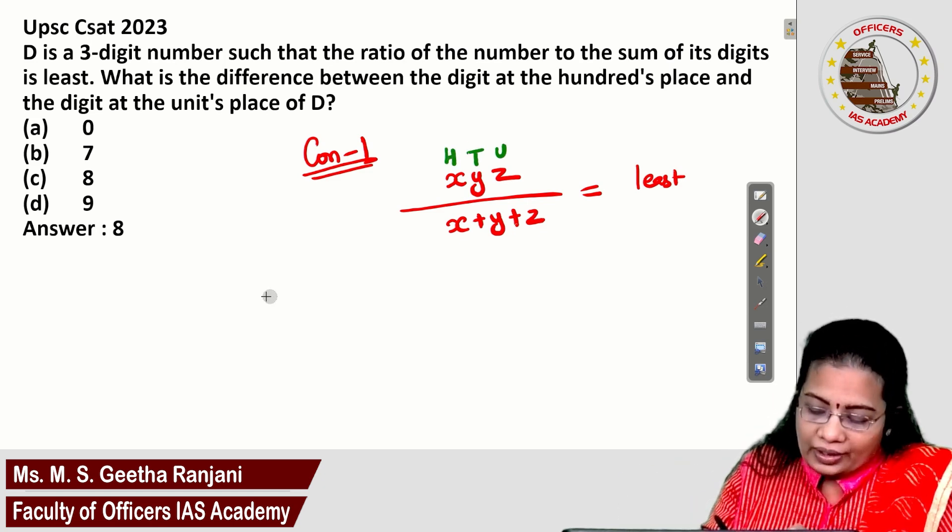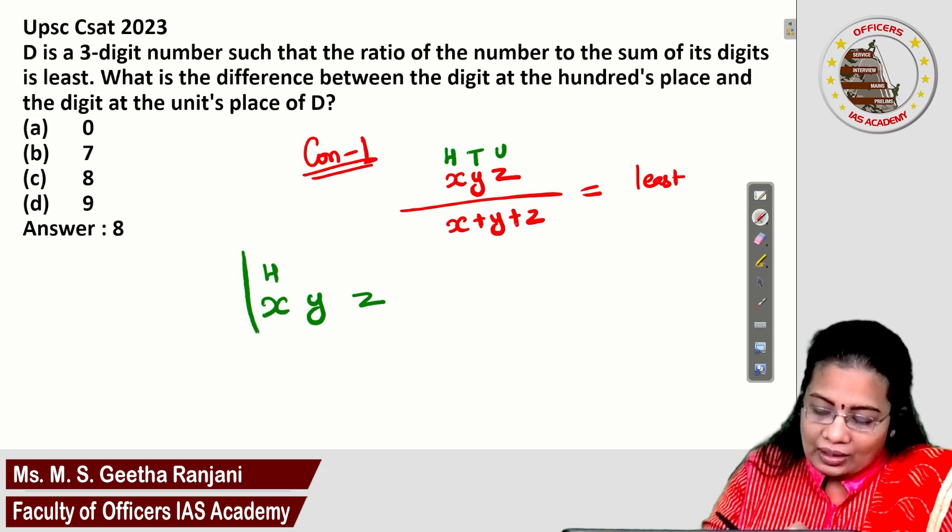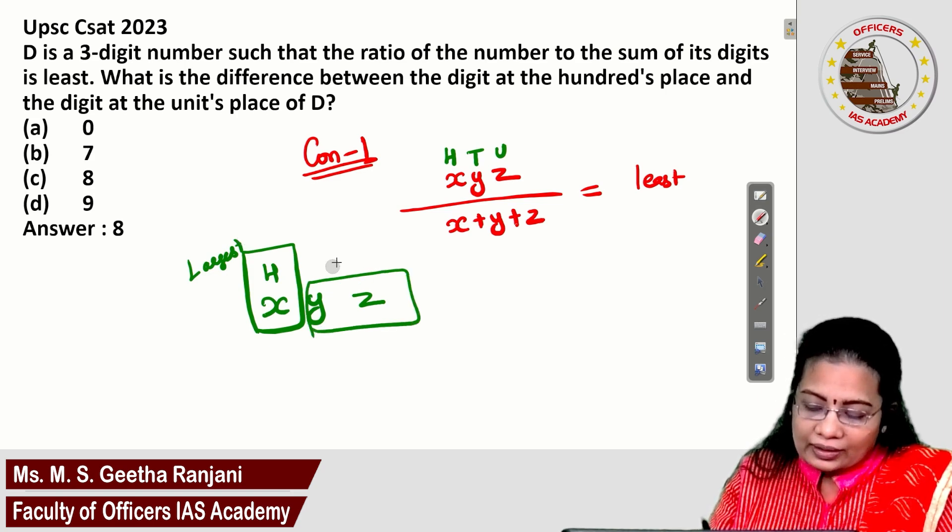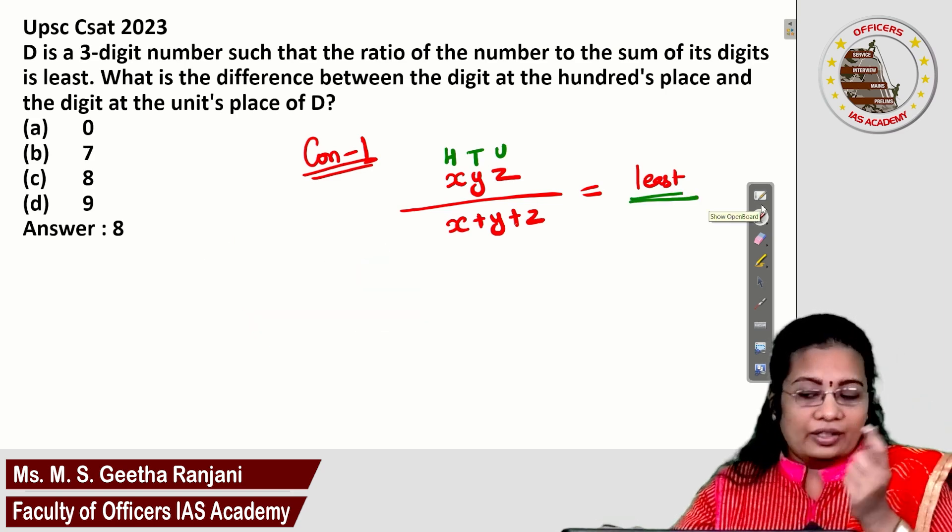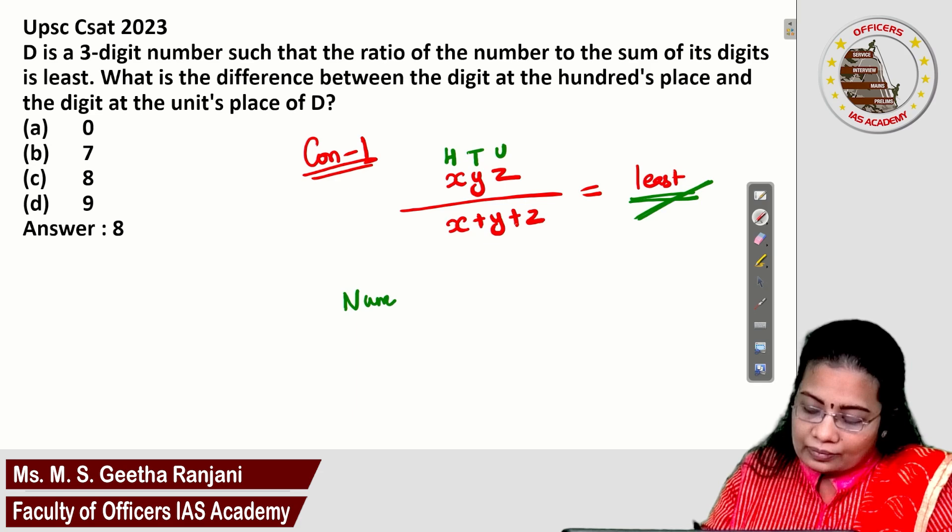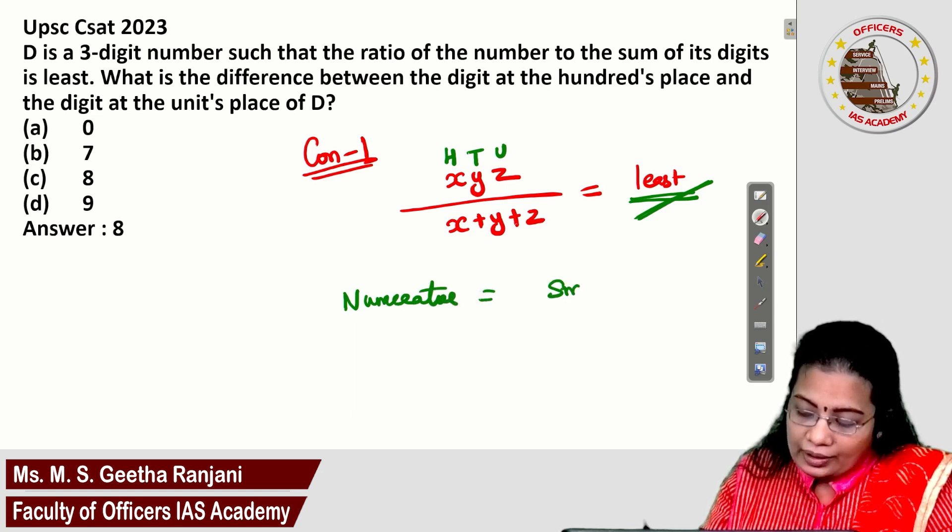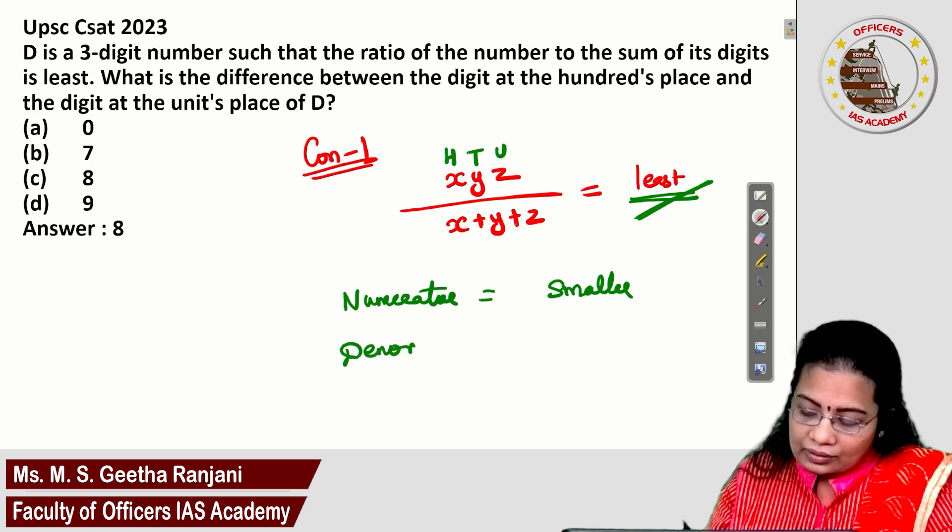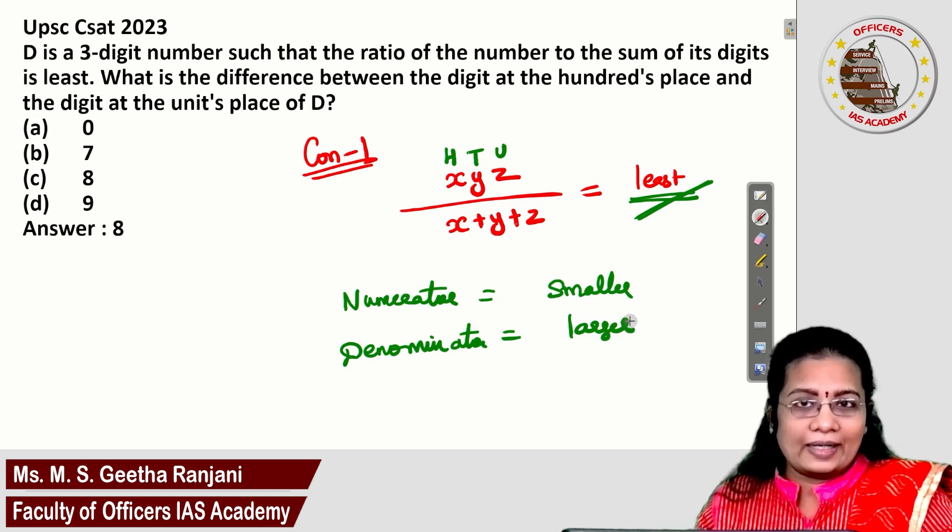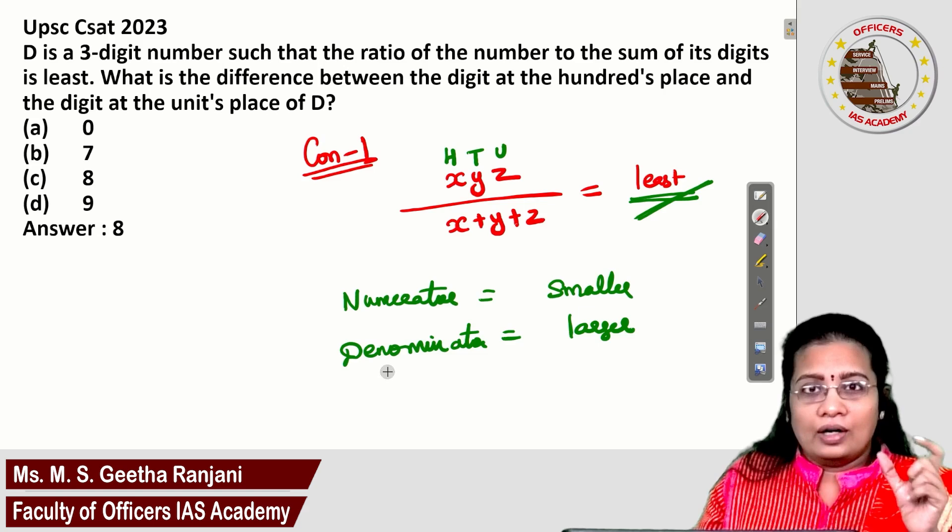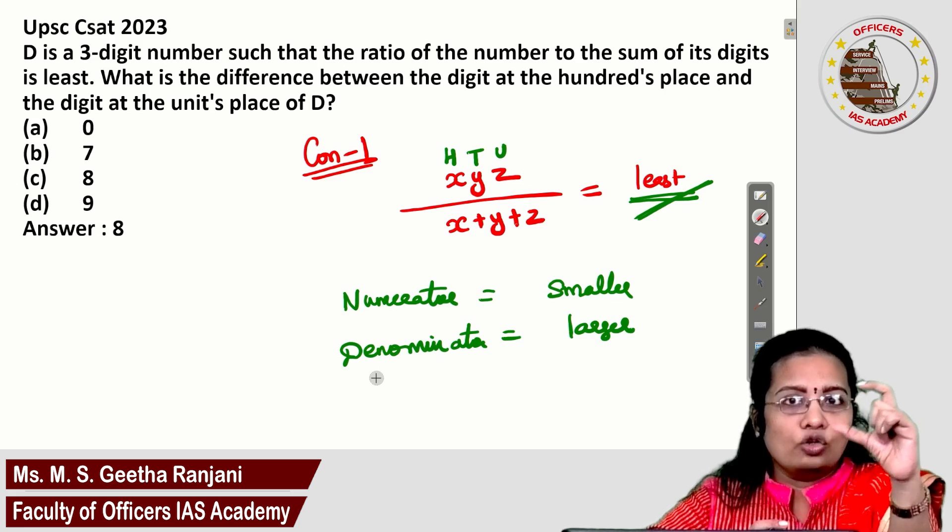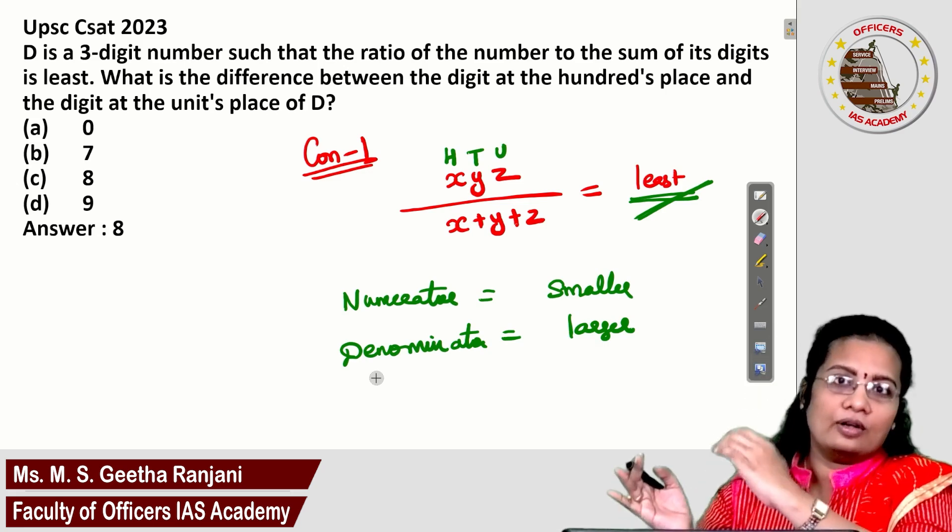So X, Y, Z - the hundreds place is the largest position among the units and tens, and the remaining are smaller than the hundreds position. To get the least number as the result, the concept is the numerator must be the smaller number and the denominator must be the larger number. Let's design the numerator to be smaller.